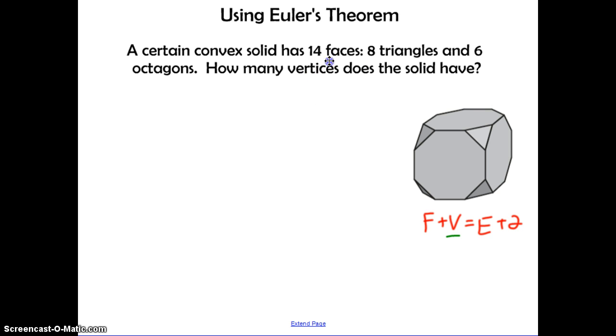So first, when you read, it says we have 14 faces. So we can substitute that in. And then it says eight of them are triangles. And then we're going to have six octagons. Now, we need to use that to calculate the number of edges. That's what we're missing. So if you remember from before, first we're going to find the total number of sides. Every triangle has three sides. So eight times three gives us 24. And every octagon has eight sides. So six times eight gives us 48. If we add those together, that's a total of 72 sides.